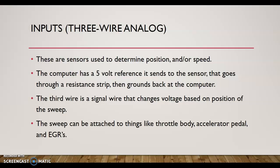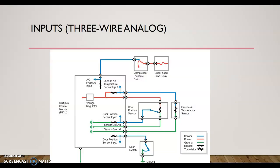Again, this is an analog three-wire sensor, so let's take a look at this diagram. Here is basically the three-wire sensor, and again this can be on AC HVAC mode door, accelerator pedal, TP, EGR—basically something where the computer needs to know the position of something.